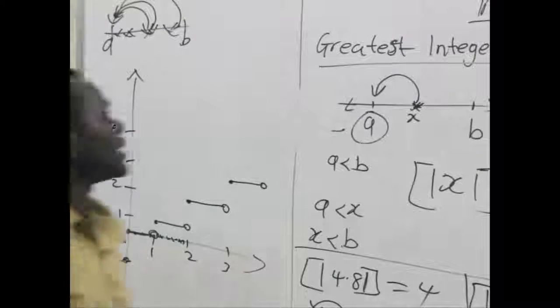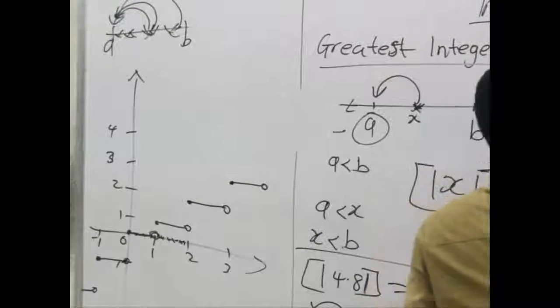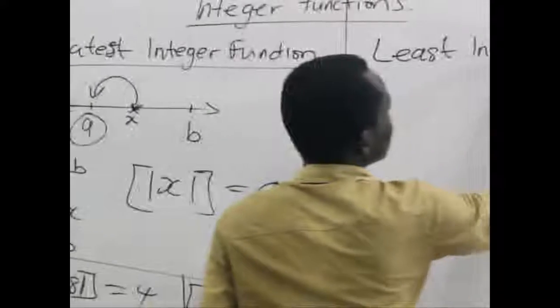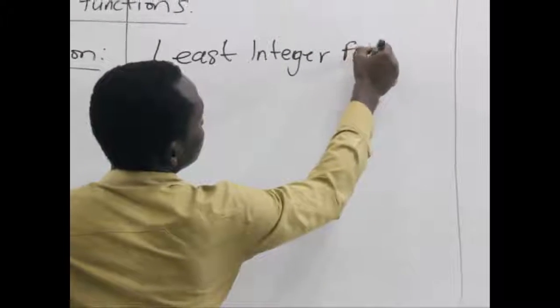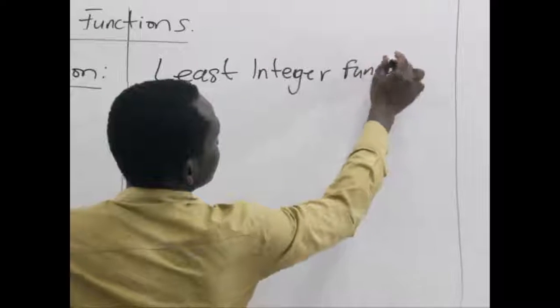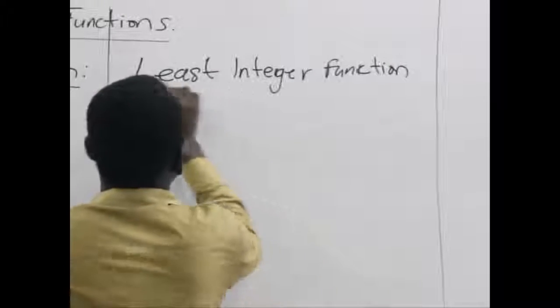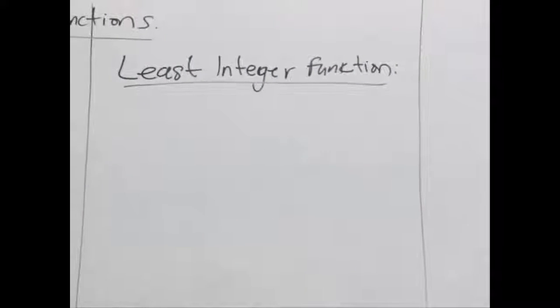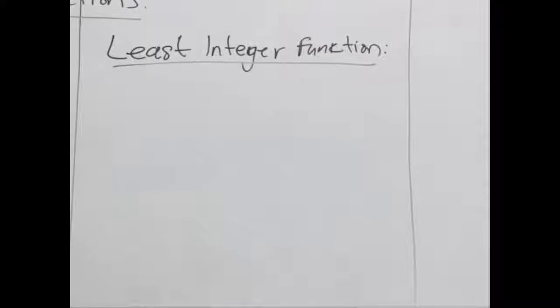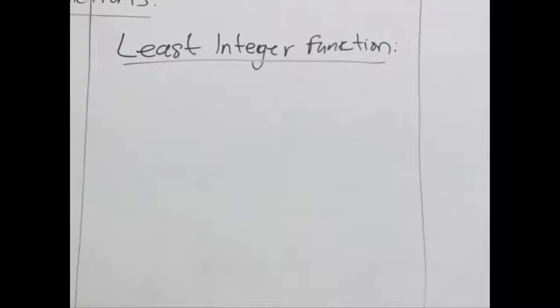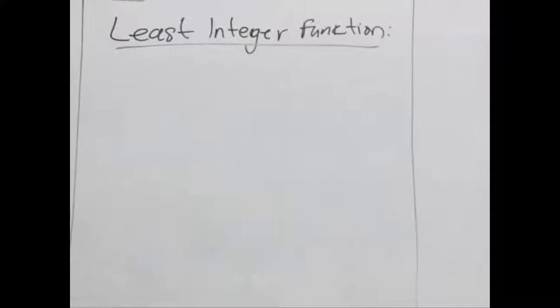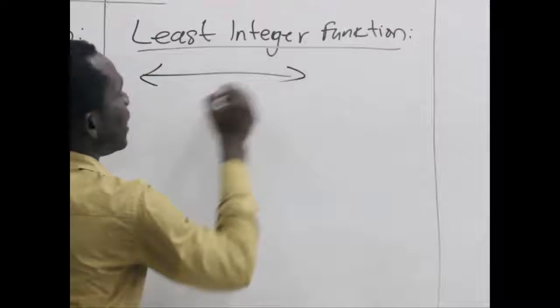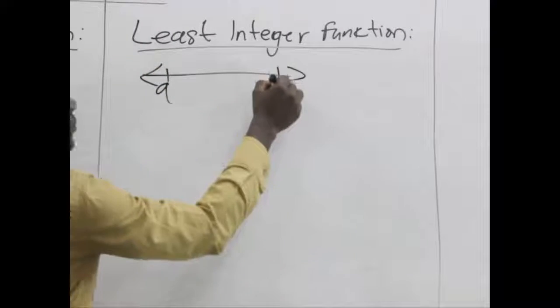Let's move to the lowest or the least integer function. Now, for this integer function, what the lowest number that is either greater or equal to the given value that we are talking about, let's say x. So, using the short number line here to assume we have a here, we have b here.